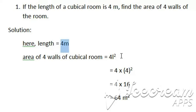The length is 4 meters and the unit becomes meter squared. So we found that the area of four walls of the cubical room is 64 meter squared. In this way we can solve this question. Thank you very much.